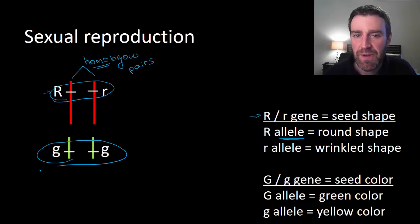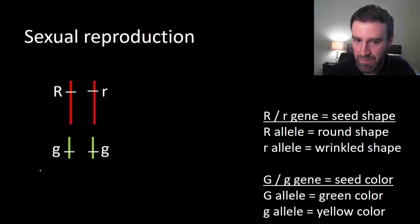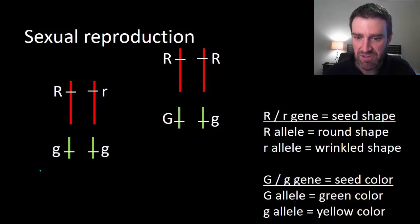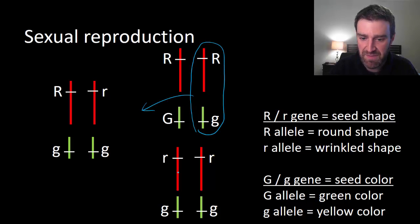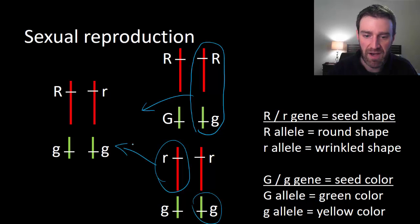Okay, so in sexual reproduction, all we're trying to say here is that maybe this organism came about because its parents looked like this genetically and they passed on a certain half of themselves. Maybe this particular parent passed on these chromosomes to the offspring, and maybe this parent passed on this chromosome and this one and created the offspring that we see genetically over there.